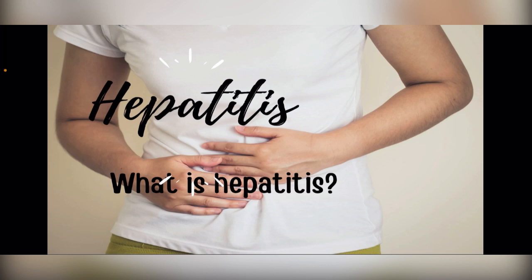To recap, hepatitis is inflammation of the liver, and viral infections are the most common cause. There are five classes: hepatitis A, B, C, D, and E. Hepatitis A results from infection with the hepatitis A virus and is an acute, short-term disease. Hepatitis B is often an ongoing chronic condition.